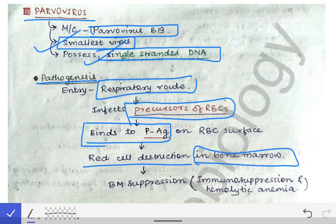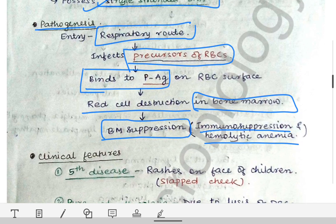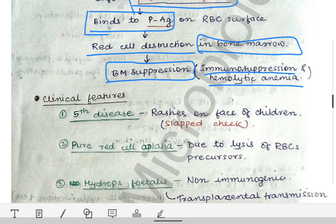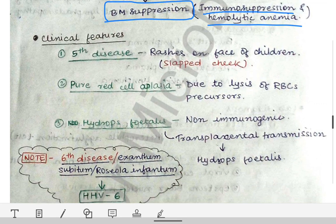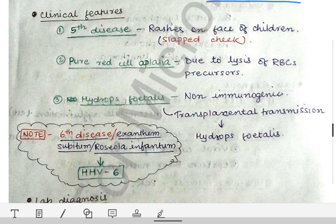Infection of the RBC precursors causes their destruction in the bone marrow itself, leading to bone marrow suppression. Once there is bone marrow suppression, that leads to immunosuppression and hemolytic anemia — meaning there will be a deficiency of RBCs plus decreased immunity.